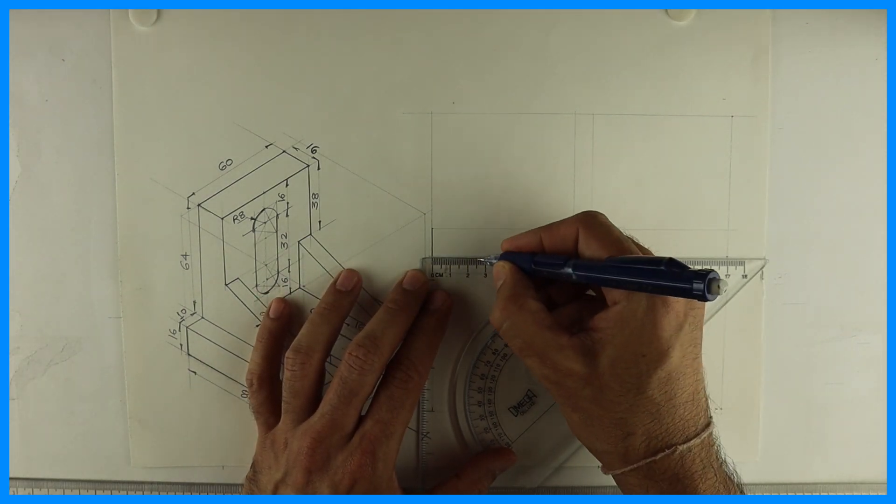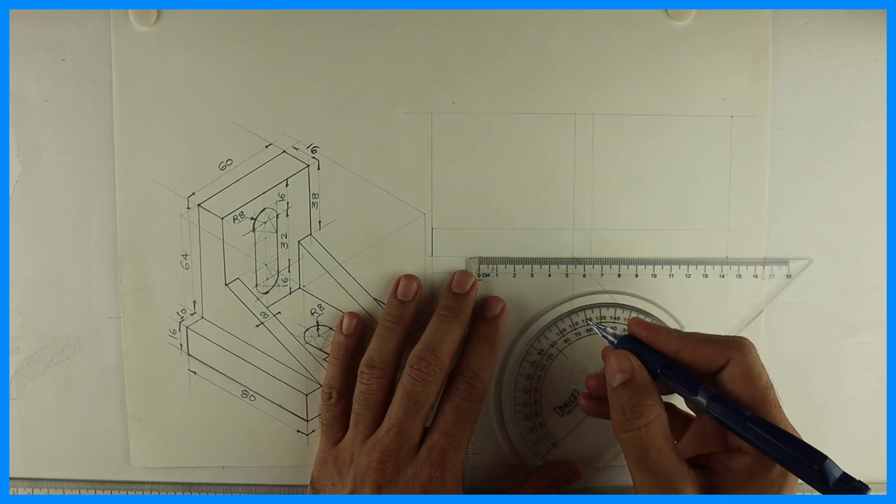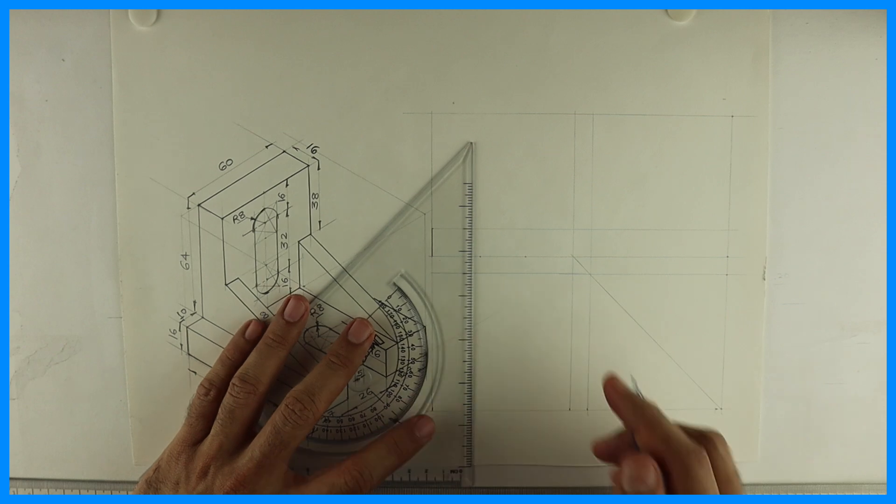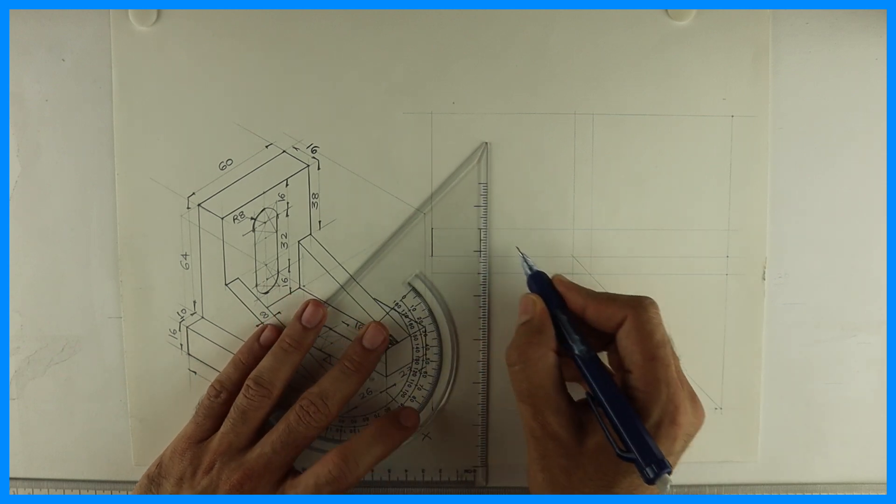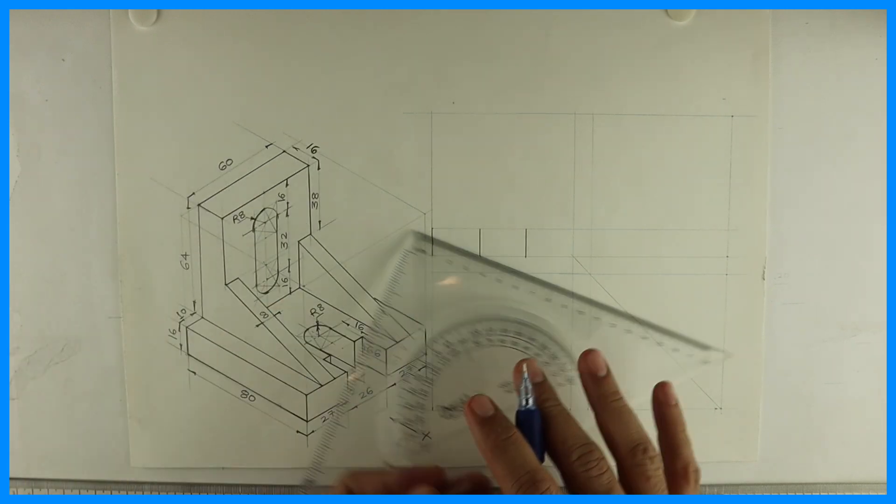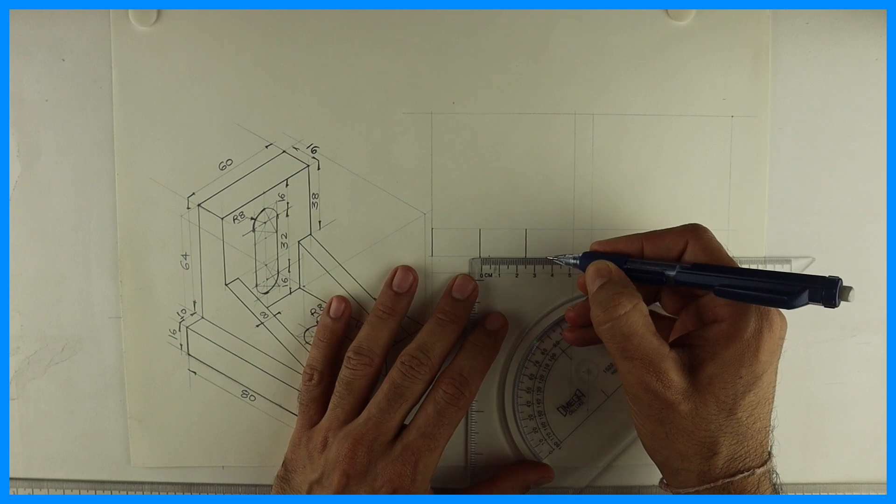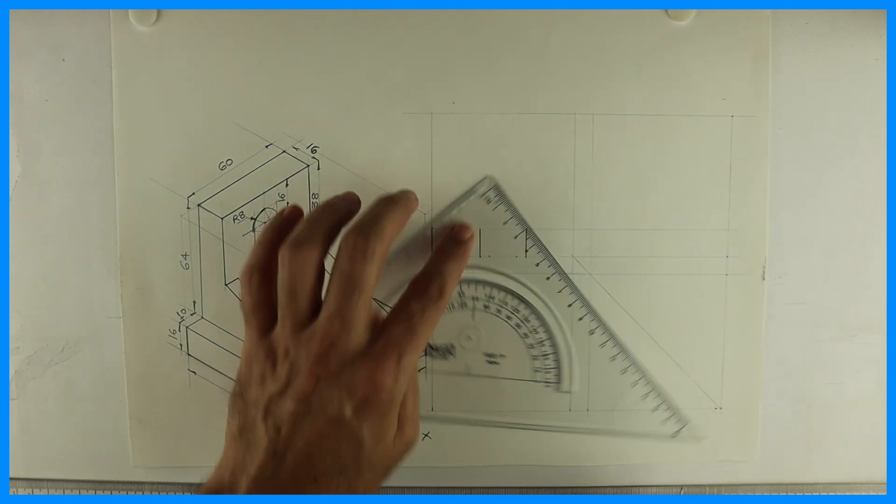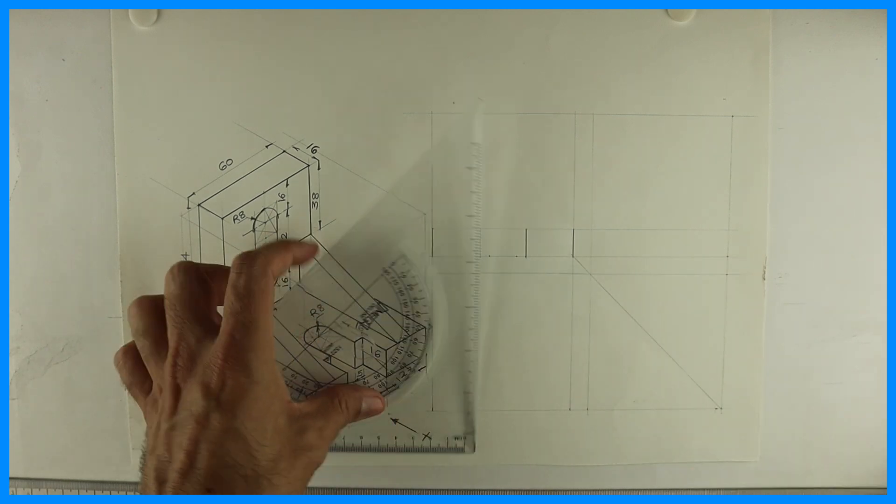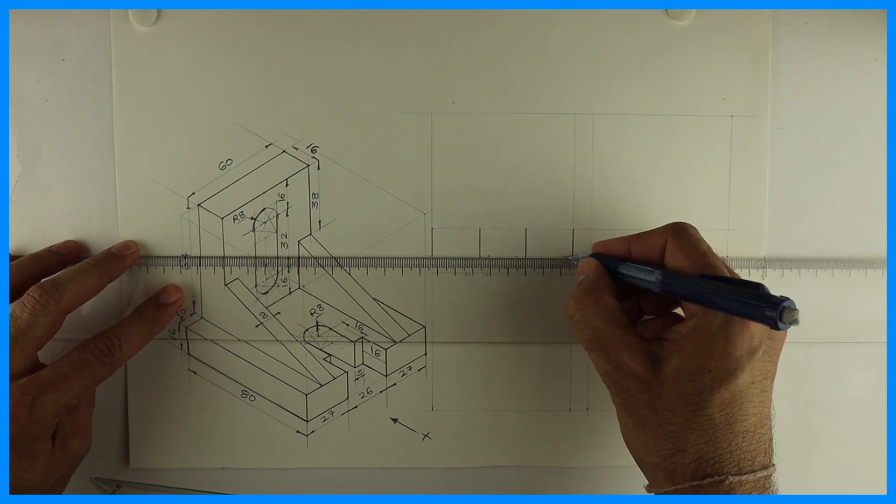See how much is this height? 16. Then if you see this is 27, then 26, then again 27. So we can draw three rectangles which we can see in front view. Then they have 5mm, so you can take 5mm on both the sides. See, this like this. So you will see this much in front view.